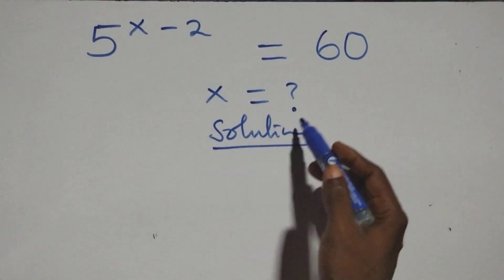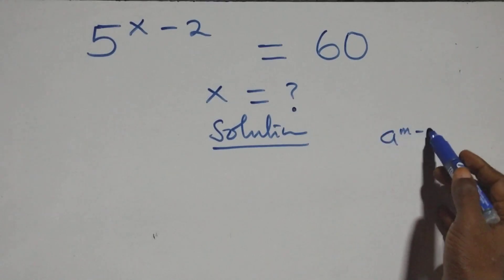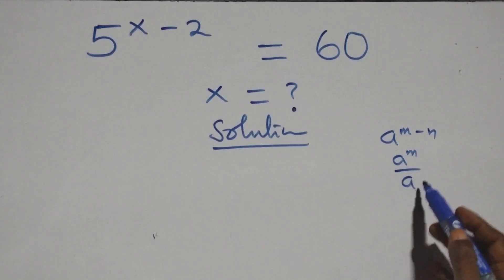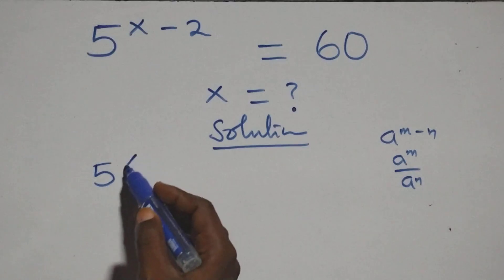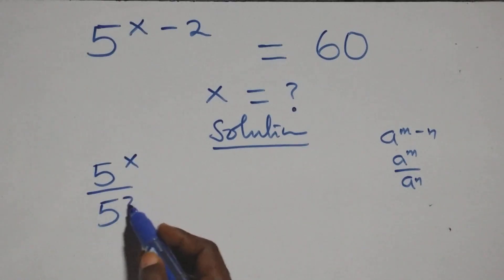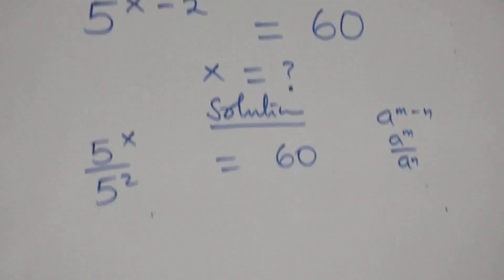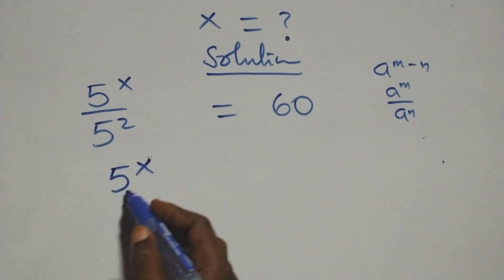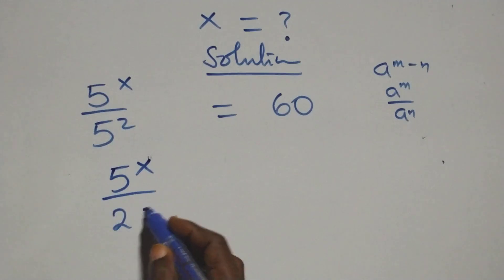From what we have here, we can write this using the rule a raised to power n minus n, which is a raised to power n over a raised to power n. So this becomes 5 raised to power x over 5 squared, equals 60 on this side. And 5 squared is 5 times 5, which is 25.